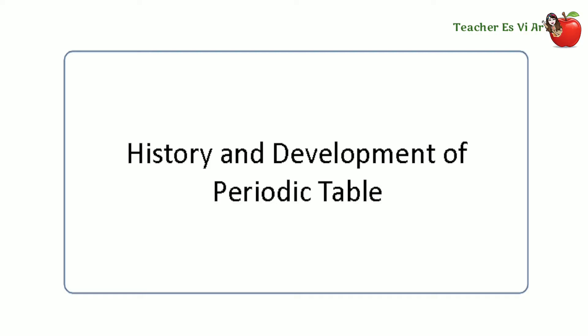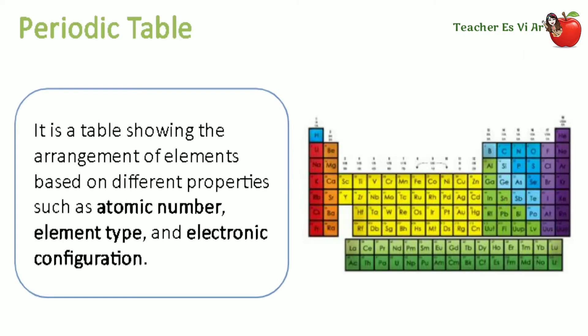Good day learners. In today's topic, we will discuss the history and development of the periodic table, from observations based on similarities and properties of elements. The periodic table of elements is a table showing the arrangement of elements based on different properties, such as atomic number, element type, and electronic configuration.